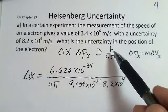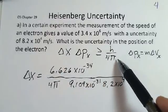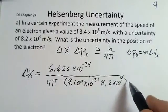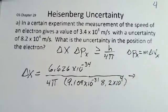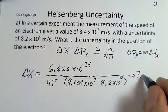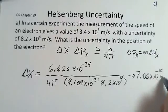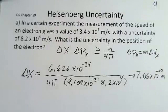The delta x is calculated with h divided by 4 pi divided by the uncertainty in the momentum. The uncertainty in the momentum is m times delta v. You should pause and do this calculation on your own calculator. I get 7.06, 10 to the minus 10 meters. 7.06 times 10 to the minus 10 meters.